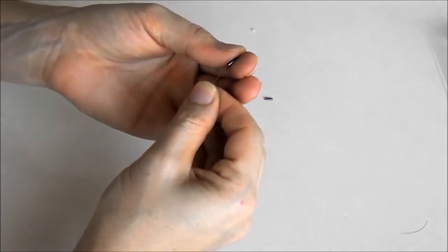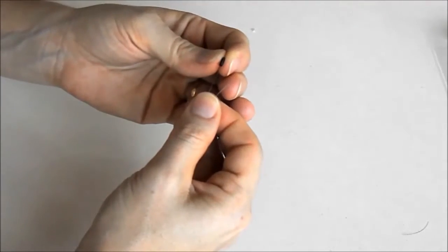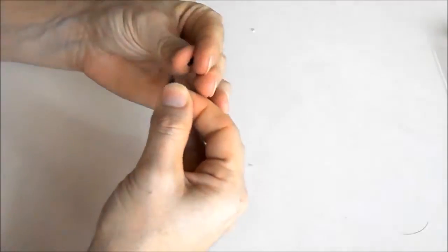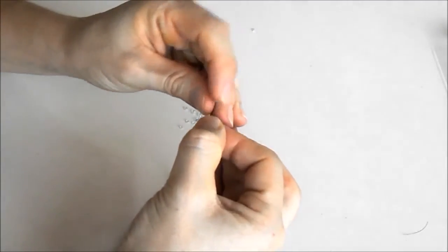Dois canutilhos, duas miçangas. Mais dois canutilhos. Agora eu fecho com uma miçanga passando uma ponta para cada lado.